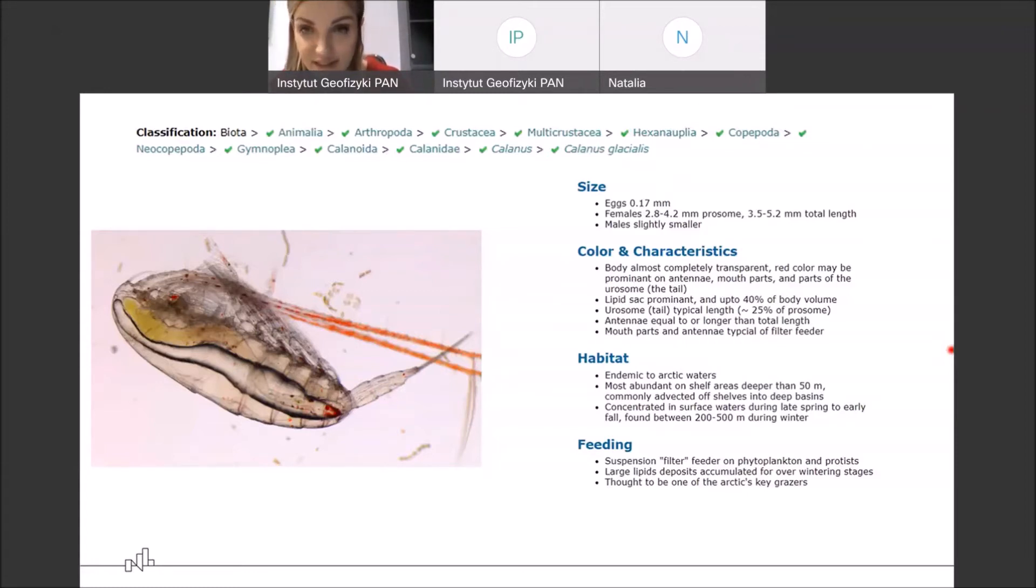And these omega-3 fatty acids are produced exclusively by marine algae, phytoplankton, algae. And so Calanus glacialis grazes on this algae. And so they accumulate a lot of omega-3. And they are key source of those nutrients in the Arctic food chain.